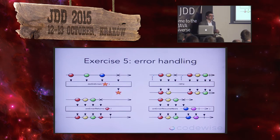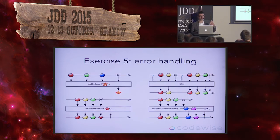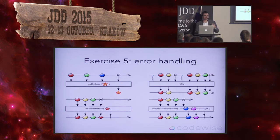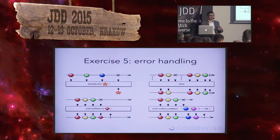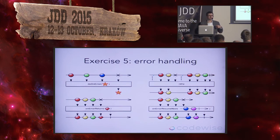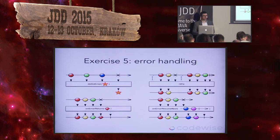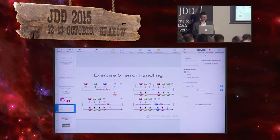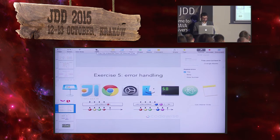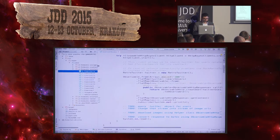Retry is interesting. It's used when we want to subscribe again. We cannot ask operators shut down after onError to start emitting again, but we can subscribe to it — everything inside the operators is created anew and the subscription goes back to the source. This would not help with hardcoded invalid Twitter data, because retry would just emit the same error again. But retry is useful for transient errors like database errors or network errors.